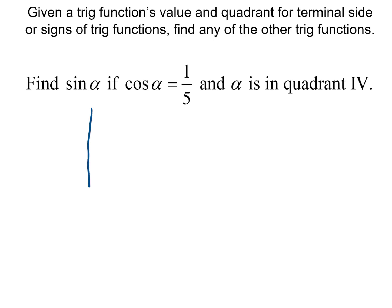So we are going to draw a triangle in quadrant 4 and we are going to label it such that the cosine is 1 fifth.